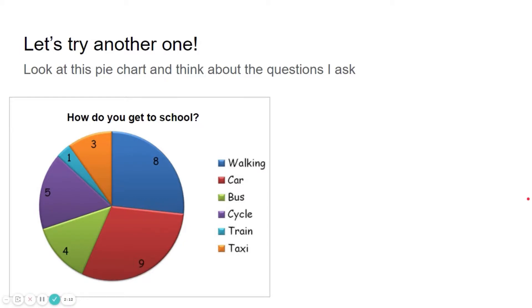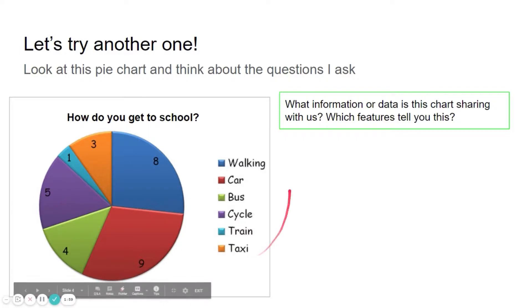Let's try another one. Look at this pie chart and think about the questions I ask. What information or data is this chart sharing with us? Which features tell you this? So we've got a title like before, how do you get to school? And then down the right hand side, you've got lots of different ways of getting to school. So we assume that this pie chart, some people have been asked, how do you get to school? And there's been different options for them to choose from.